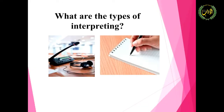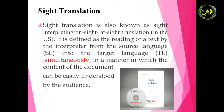What are the types of interpreting? Before discussing simultaneous interpreting, we need to know all types of interpreting. First, we have sight translation, also known as sight interpreting or on-site translation in the US. It is defined as the reading of a text by the interpreter from the source language into the target language simultaneously, in a manner in which the content of the document can be easily understood by the audience.